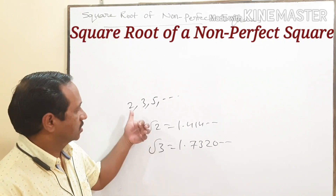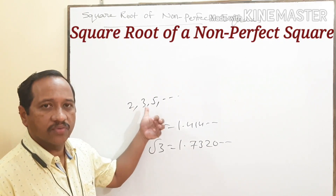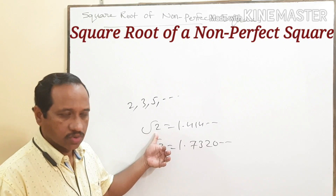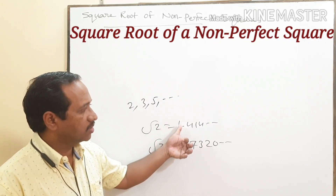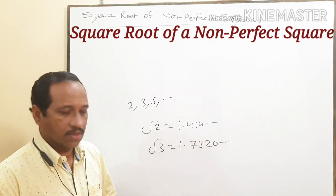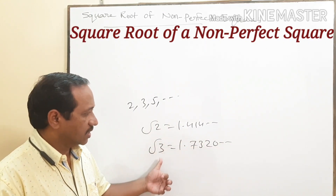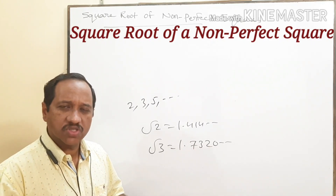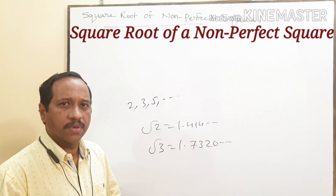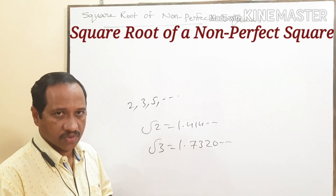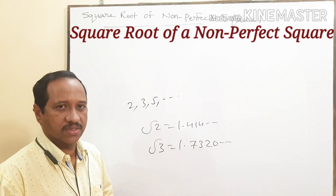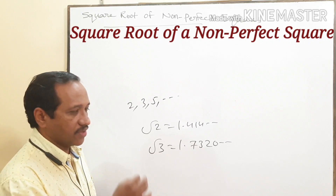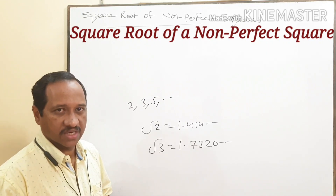What are non-perfect squares? 2, 3, 5, etc. You may be remembering what is the value of root 2 — 1.414, etc. Root 3 — 1.7320, etc. But it is not possible to remember the square roots of all the non-perfect squares. So, here is a simple method to find the square root of a non-perfect square.